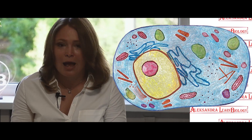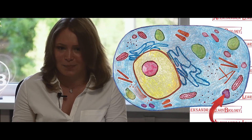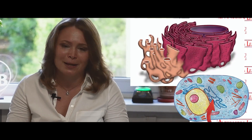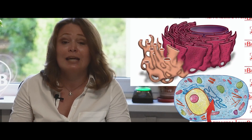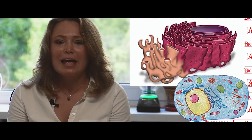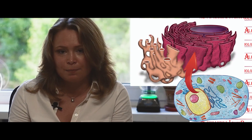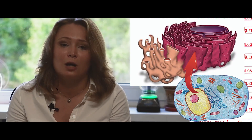Now let's consider single-membrane organelles. Single-membrane organelles include vacuoles, the Golgi complex, the endoplasmic reticulum, and lysosomes. The endoplasmic reticulum forms a whole labyrinth of membranes within the cell, so it separates the components of the cell and allows different chemical reactions to occur in different parts of the cell. If there are ribosomes on the ER membranes, then it is called rough ER, and proteins are formed on it.